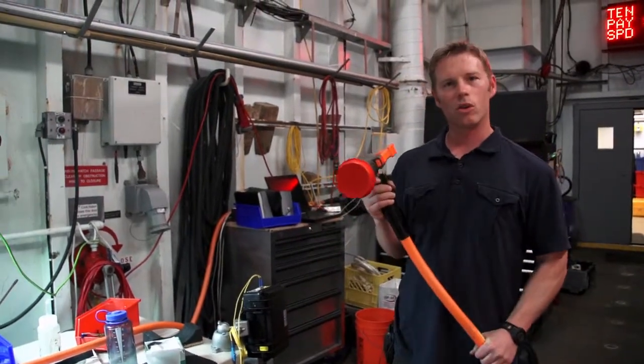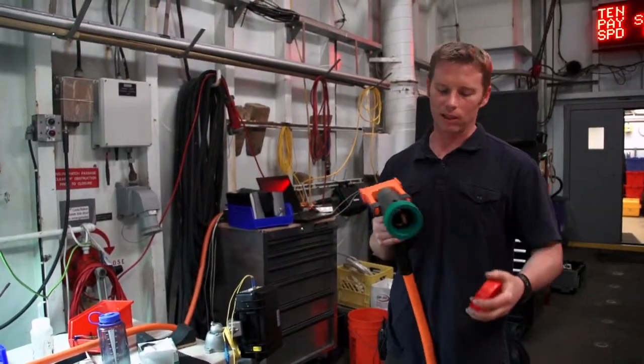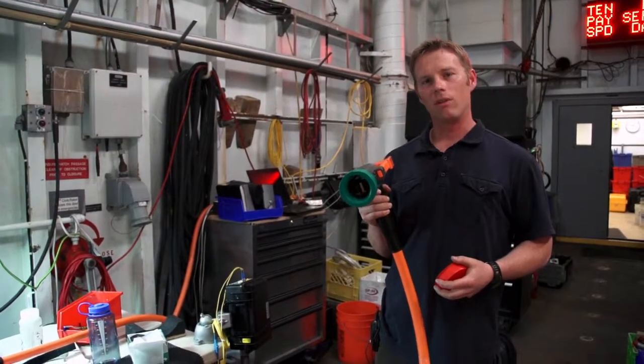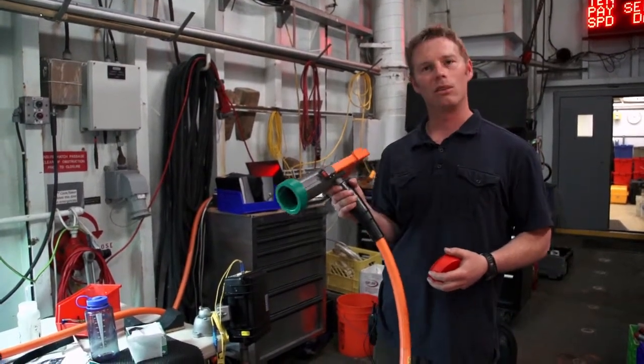The start of it is this orange oily hose with an underwater mateable connector. This allows the ROV to plug the cable into the instrument platform.